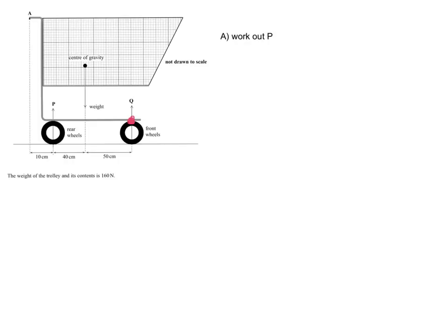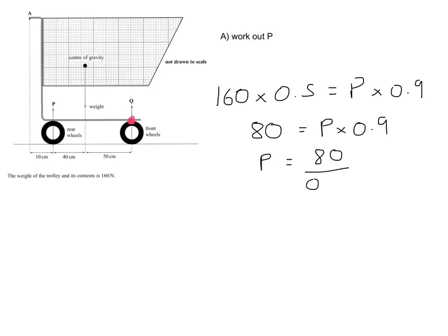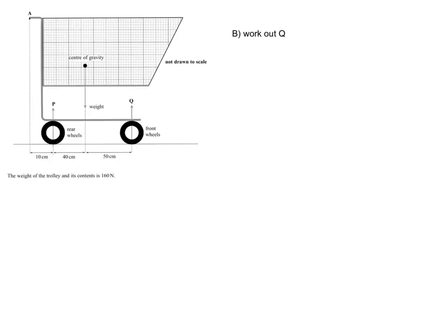Our anticlockwise moment is provided by the weight of the trolley, and that's half a metre from Q. So, our anticlockwise moment is 160 newtons times 0.5, and that's going to be equal to the force P times the distance between P and Q, which is 0.9 metres. So, that's 80 newton metres are going to be equal to P times 0.9. So, P will end up being 80 divided by 0.9, which turns out to be 89 newtons. I'm giving that to two significant figures because everything in the question has been given to two significant figures.